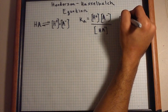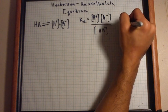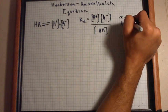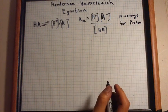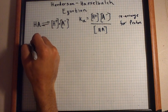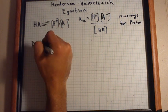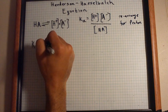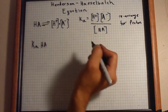We find that it's real simple. Let me say Ka times HA divided by A.